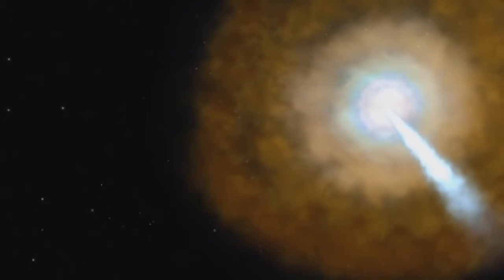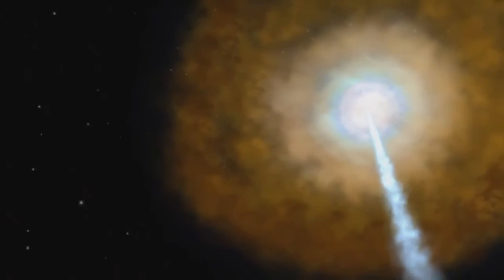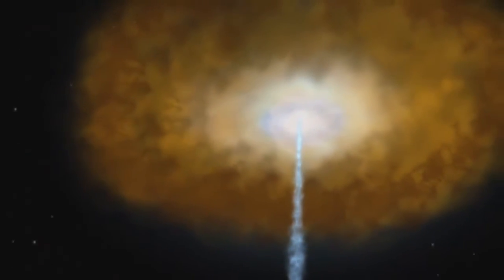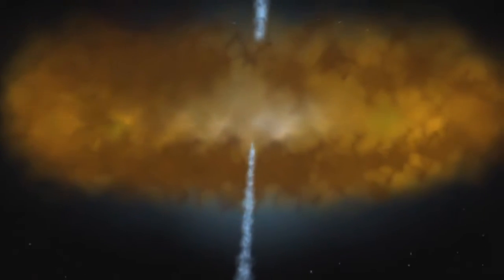What emission we detect from an active black hole is a function of how we see it, whether we're looking face-on and into one of its jets, or viewing it from the side through the disk of gas and dust that surrounds it.